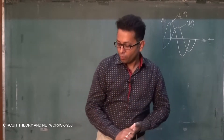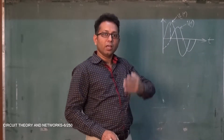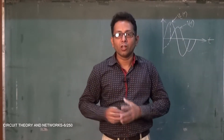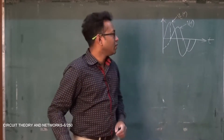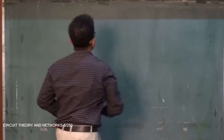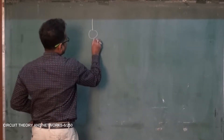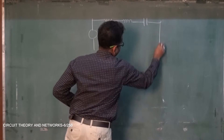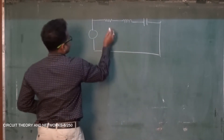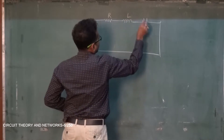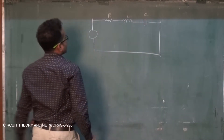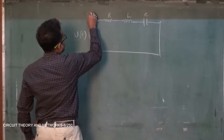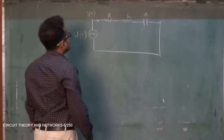So what will be the actual impedance of a circuit that has a resistor, capacitor, and inductor — all passive components? Let's consider a very simple series RLC circuit. All the components are connected in series: R, L, and C, with an AC voltage source V(t) and current i(t).